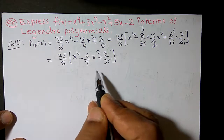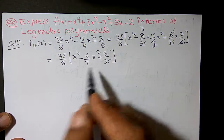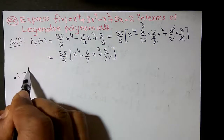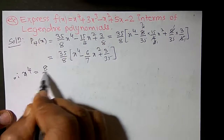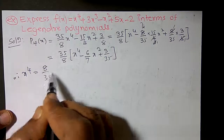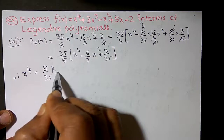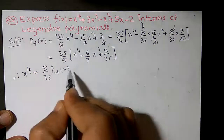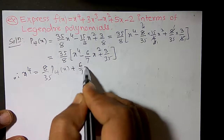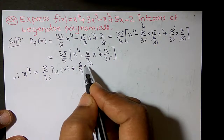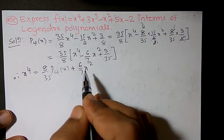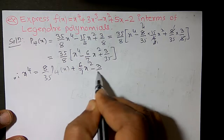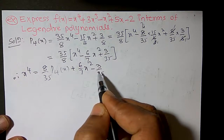So we can write x⁴ = (8/35)P4(x) + (6/7)x² - 3/35, bringing the other terms to the other side.